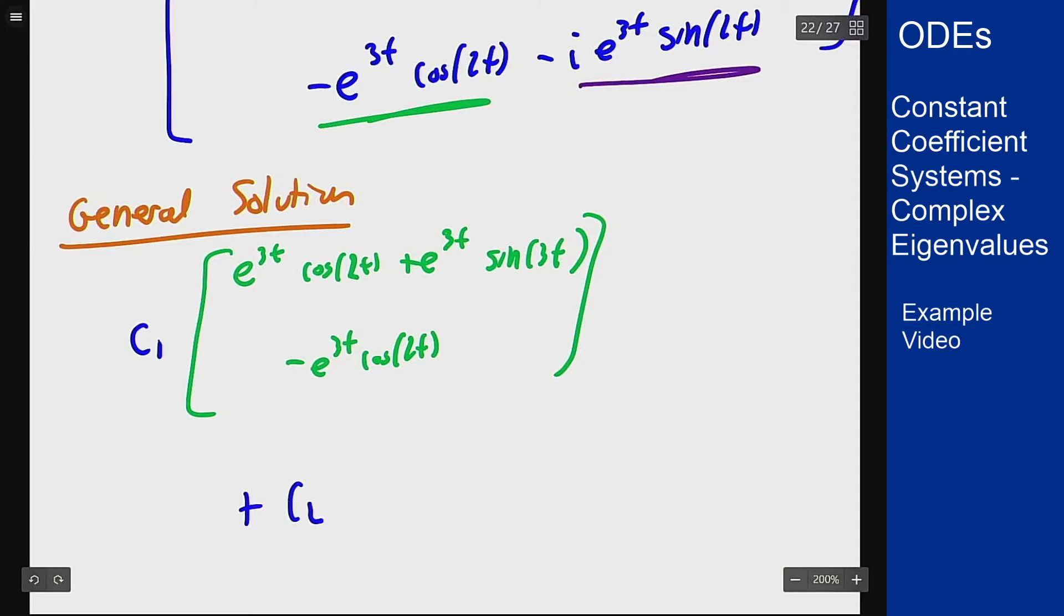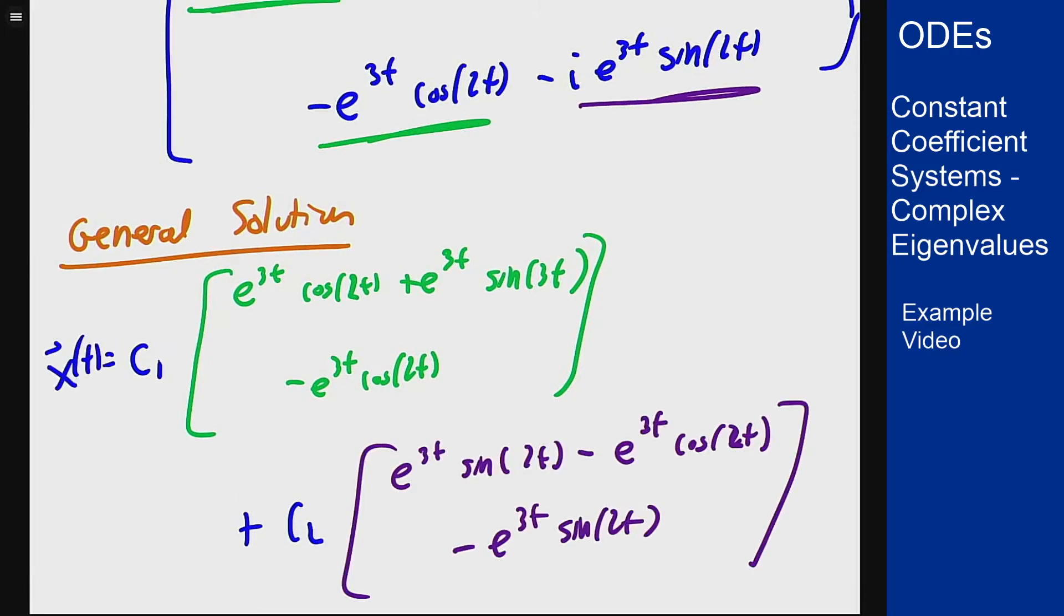Now if we want to solve an initial condition we want to make this match up with a certain value at t = 0. Let's take this and plug in t = 0 and see what we get.